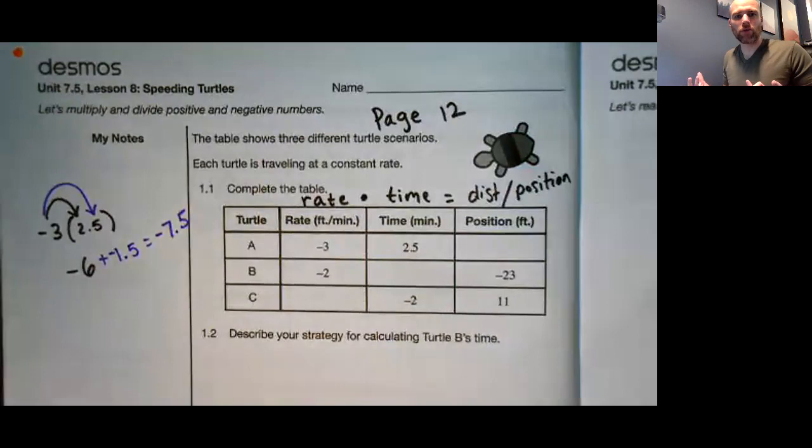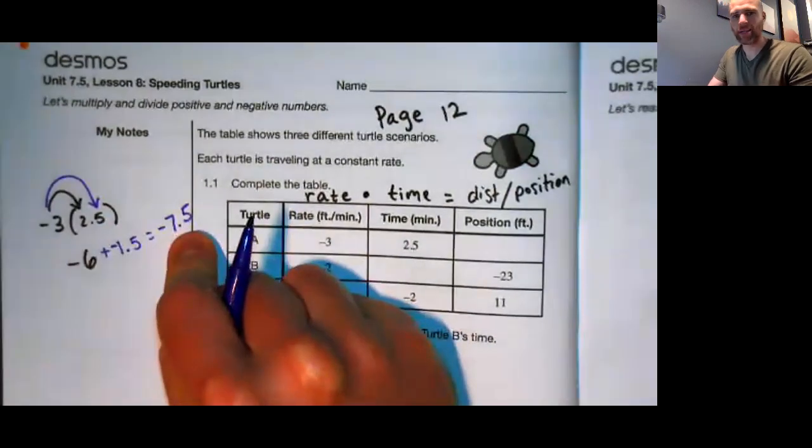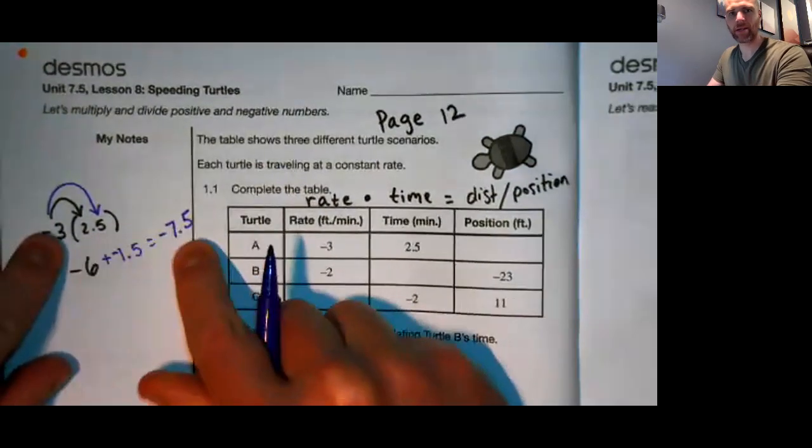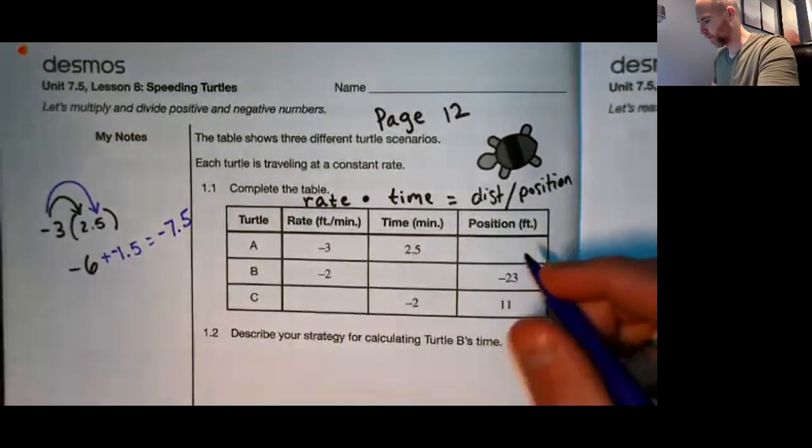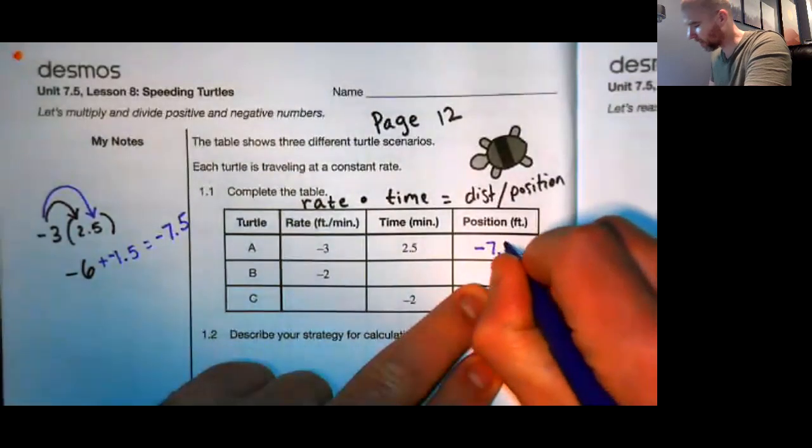Honestly, you don't even really have to do all this. If you know that 3 times 2.5 is 7.5, then all you have to do at that point is just remember the rule that a negative times a positive gets you the negative product, or negative answer. So this turtle's final position is negative 7.5.